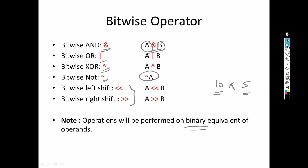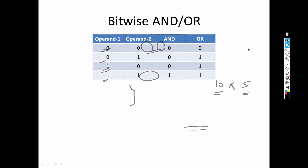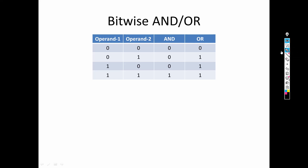These are the different bitwise operators. Now let's understand the concept of bitwise AND and bitwise OR using an example. Since it is a binary type of operator, we have two operands. In binary we have only two values: 0 or 1. AND is like multiplication and OR is like summation.